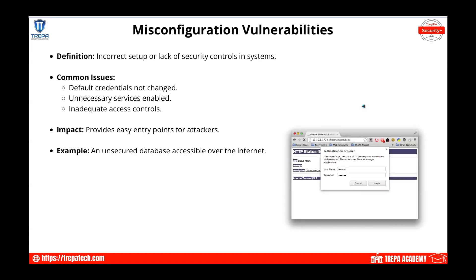Misconfiguration vulnerabilities refer to the incorrect setup or lack of security controls in a system. During the deployment of a web server or service, we might focus only on availability — getting it up, working, and accessible — without accounting for security. This includes failing to change default credentials, enabling unnecessary services (which sometimes happens with Windows Server), and not establishing proper IAM or adequate access controls. The mitigation is to harden devices and implement good access control schemes.